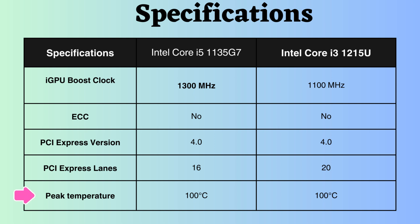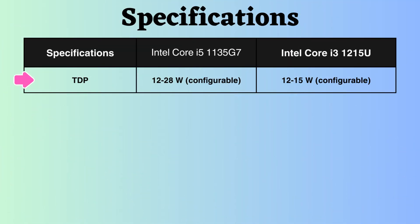Both of these processors can withstand temperatures up to 100 degrees Celsius. The TDP of both processors is configurable, and the Intel Core i5-1215U has a lower TDP value than the Intel Core i5-1135G7, making it potentially better in terms of power consumption.